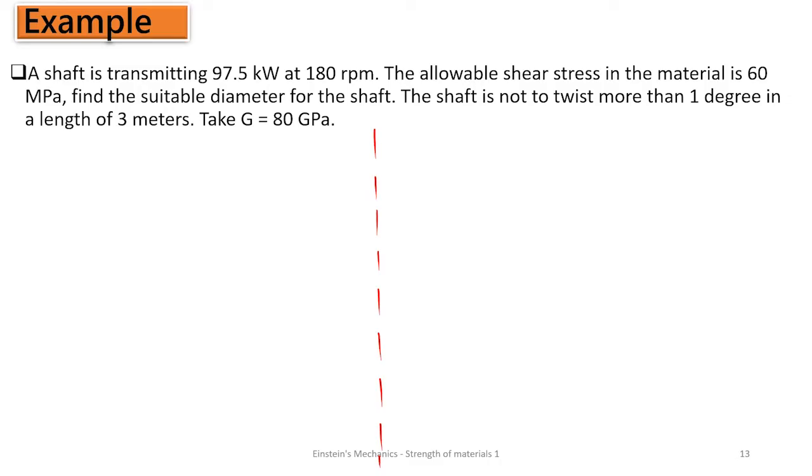A shaft is transmitting 97.5 kilowatts at 180 rpm. The allowable shear stress in the material is 60 MPa. Find the suitable diameter for the shaft. The shaft is not allowed to twist more than one degree in a length of 3 meters. Take G as 80 GPa.